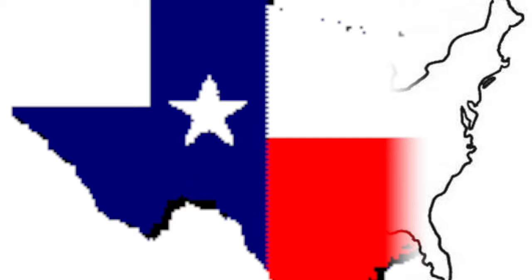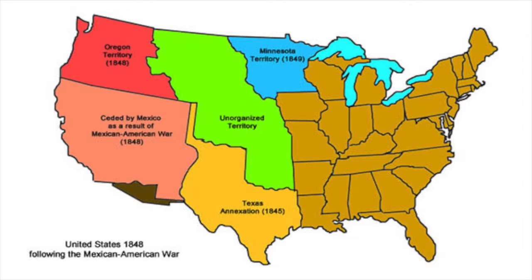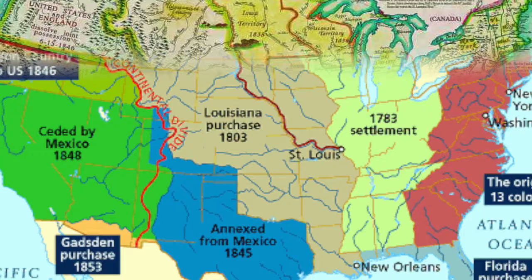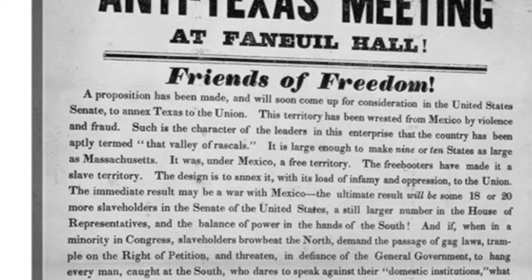Manifest Destiny had a relationship with westward expansion because it led to westward migration. At first it helped lead to the expansion of U.S. territory, but then led to the Mexican-American War because it gave the impression that America deserved more land than the Mexicans did. The Americans thought that God gave them this destiny, which made it acceptable to take the land from Mexico.